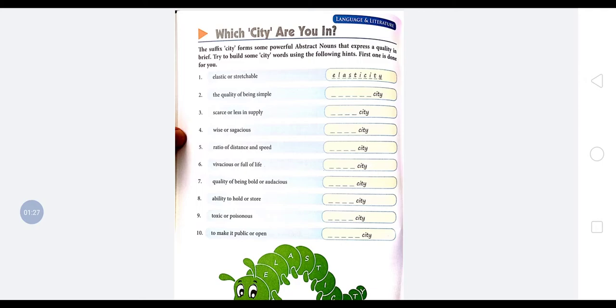Then, scarce or lessen supply - jis cheez ki kami hoti hai. Scarce means kam hona, yeh supply mein kami hona kisi cheez ki. It will be known as scarcity. Then fourth is wise or sagacious - wise, thoda intelligent jisam kiate hai. That is sagacity.